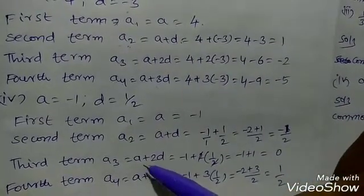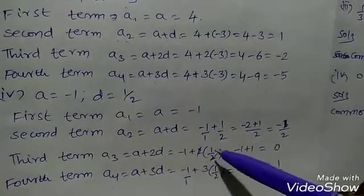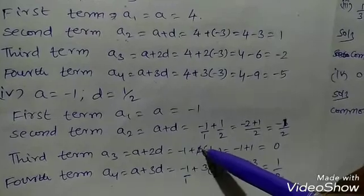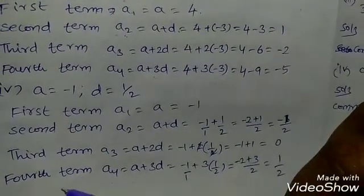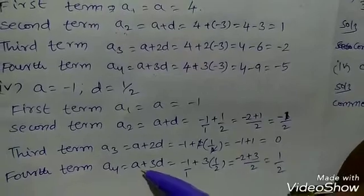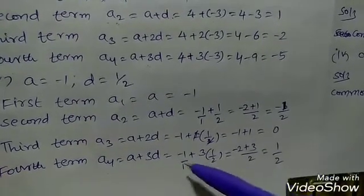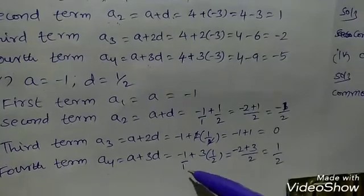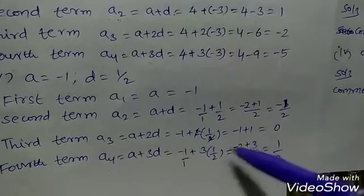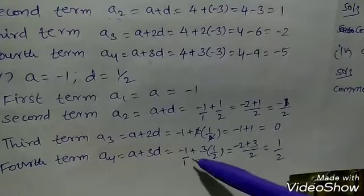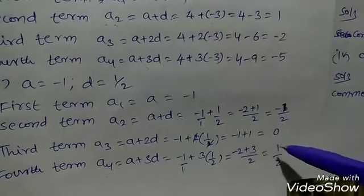Third term a3 equals a plus 2d, that is minus 1 plus 2 into 1 by 2. So minus 1 plus 1 equals 0. Fourth term a4 equals a plus 3d, that is minus 1 plus 3 into 1 by 2. Using LCM cross multiplication: minus 1 into 2 is minus 2, plus 3, over 2. So minus 2 plus 3 equals 1 by 2.